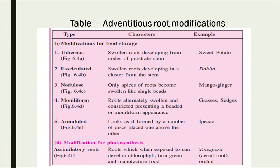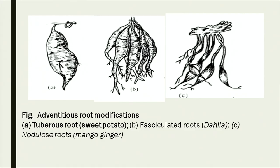Now let's look at the adventitious root modifications with examples. Tuberous roots are seen in sweet potato. Fasciculated roots are seen in Dahlia. Nodulose roots are found in mango and ginger. Moniliform roots are found in grasses, and annulated roots in Ipecac. The pictures show adventitious root modifications — tuberous roots, fasciculated roots, and nodulose roots.